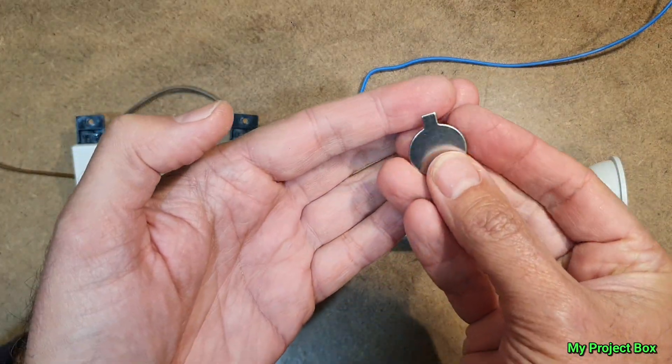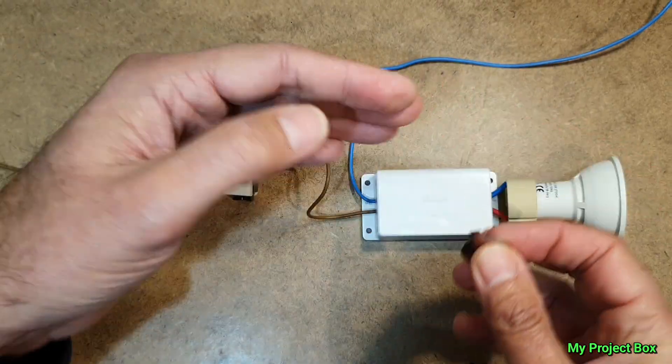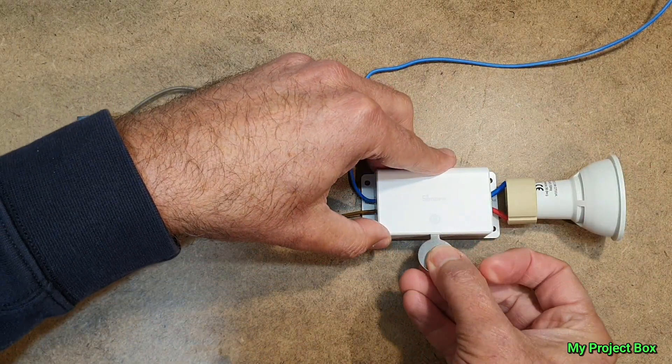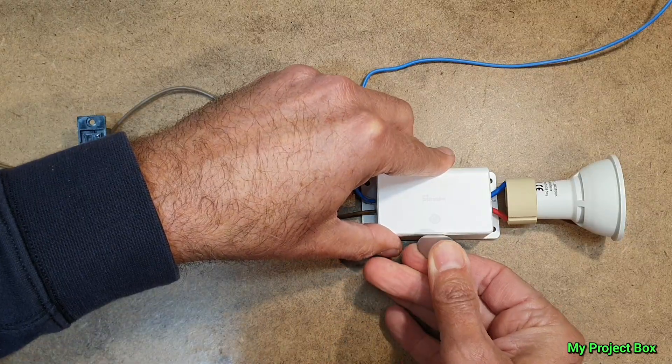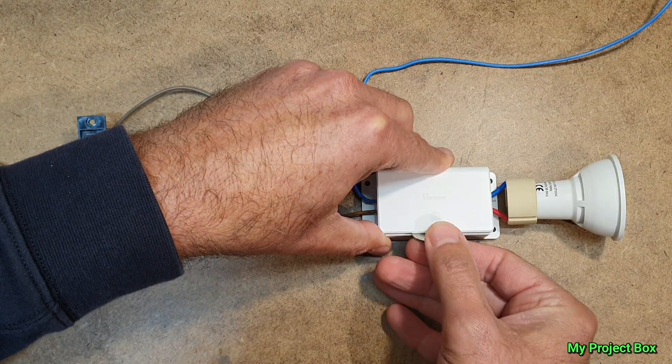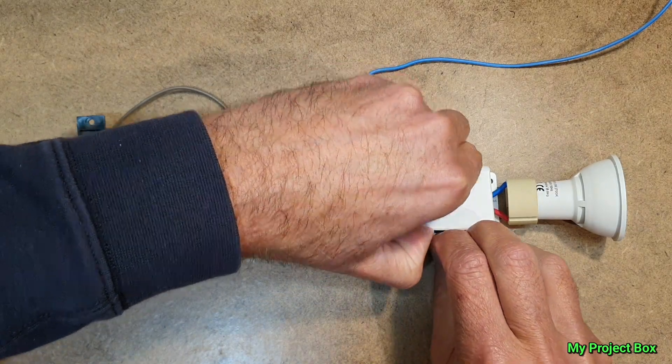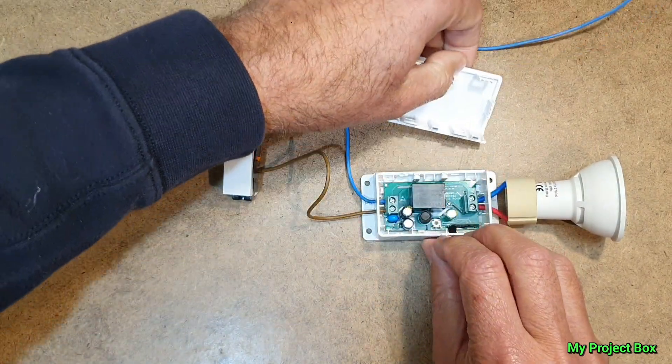So to open it you can use the little tool they provide, which is essentially like a screwdriver tip that just goes into this little slot here. And pushing it forward like that undoes the catch, and then you just pull it apart.